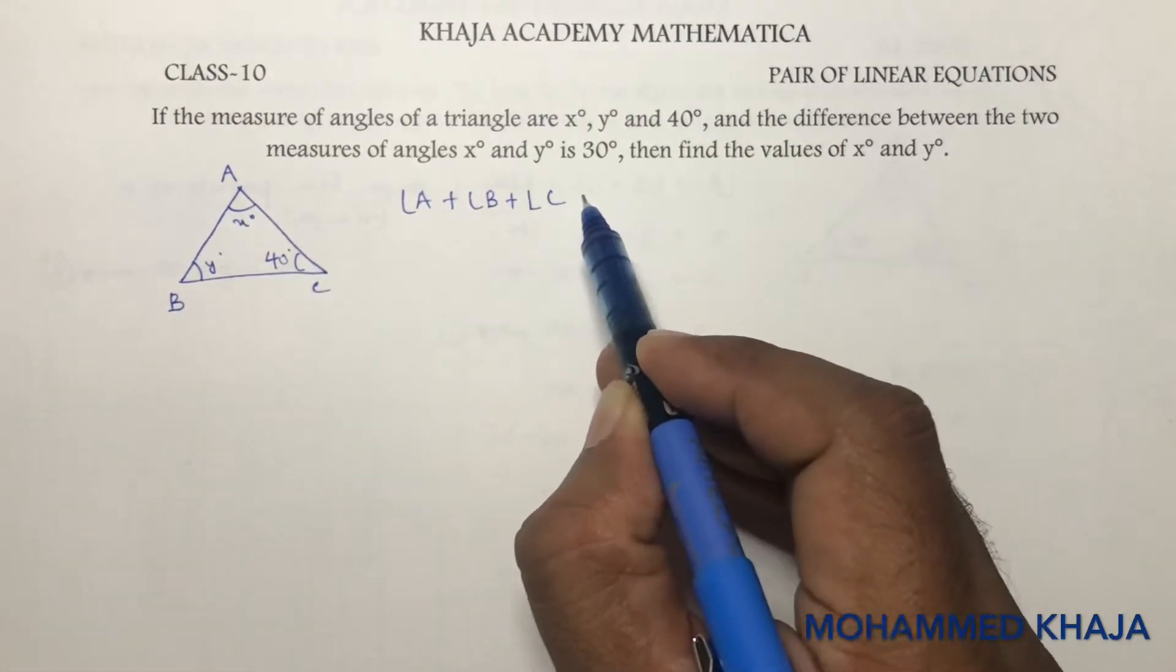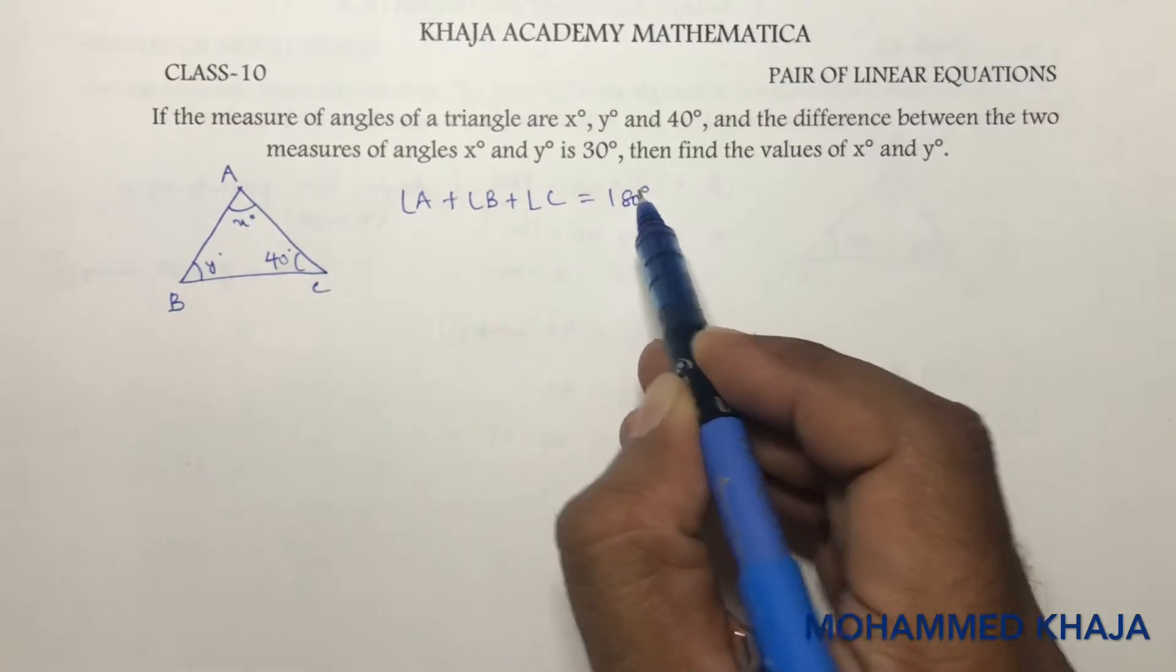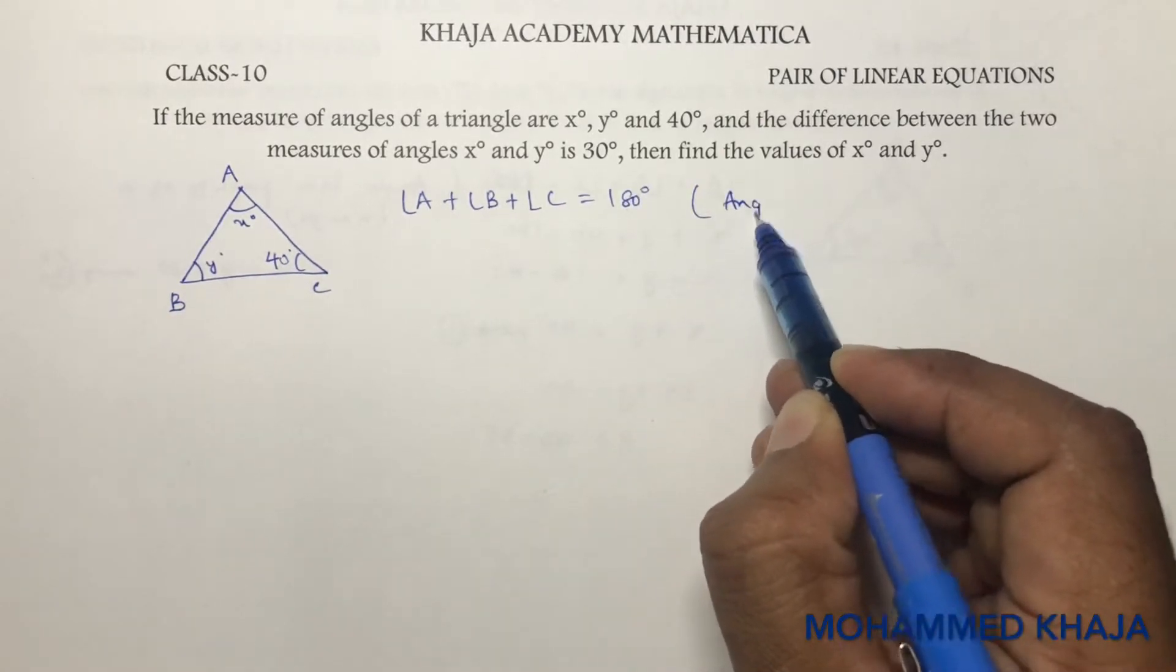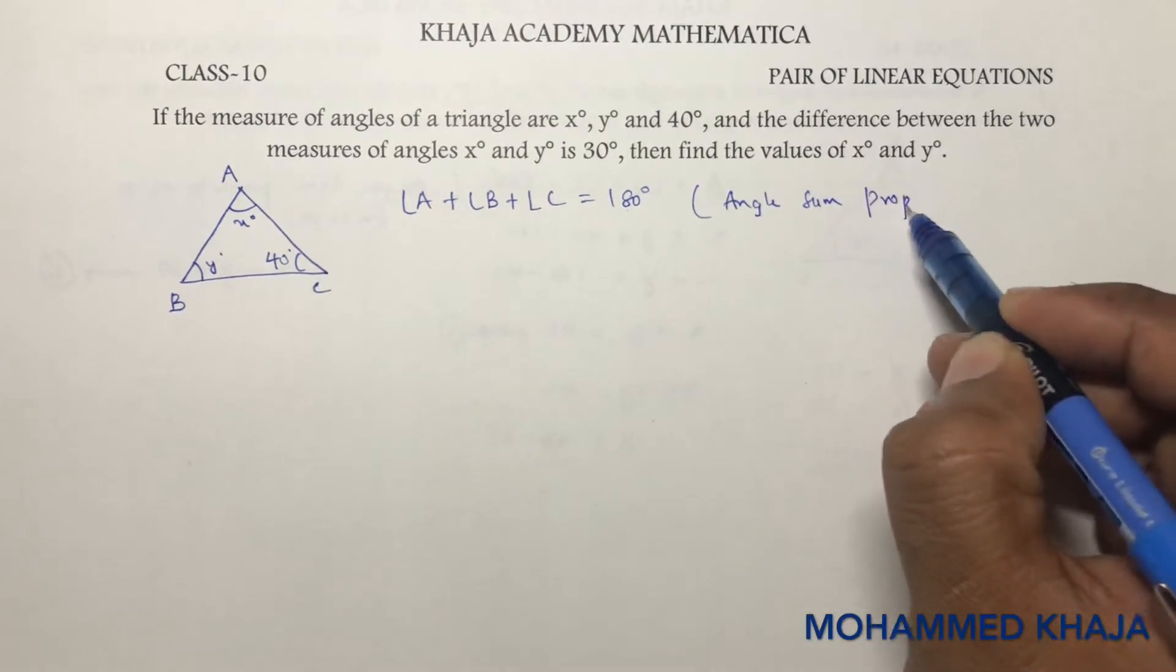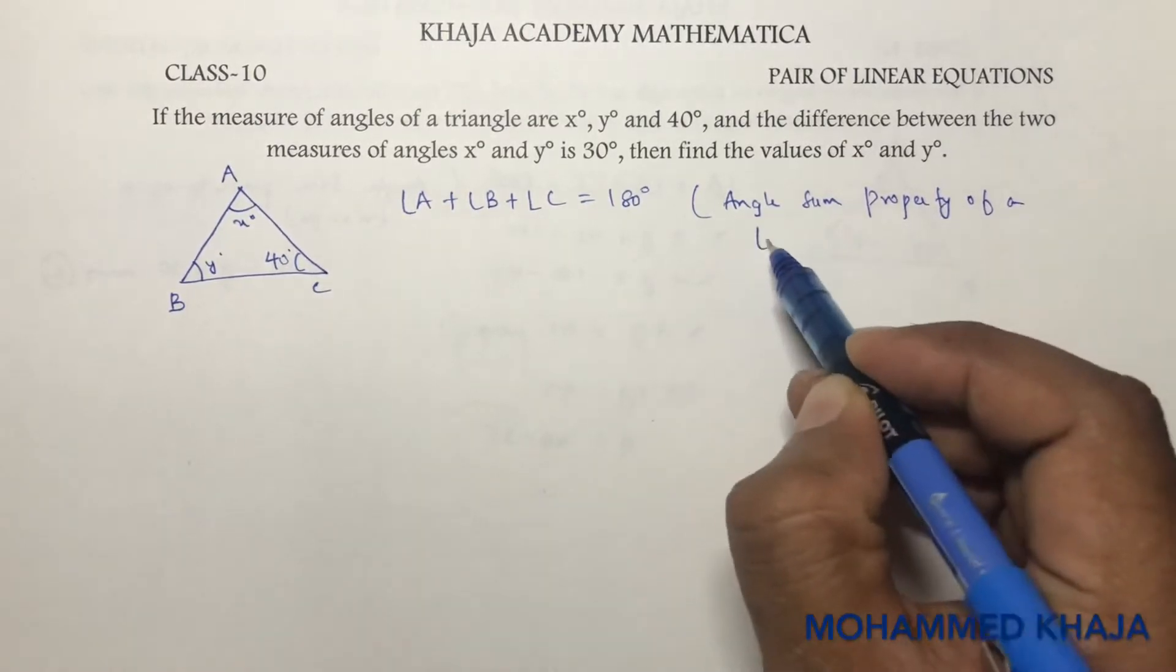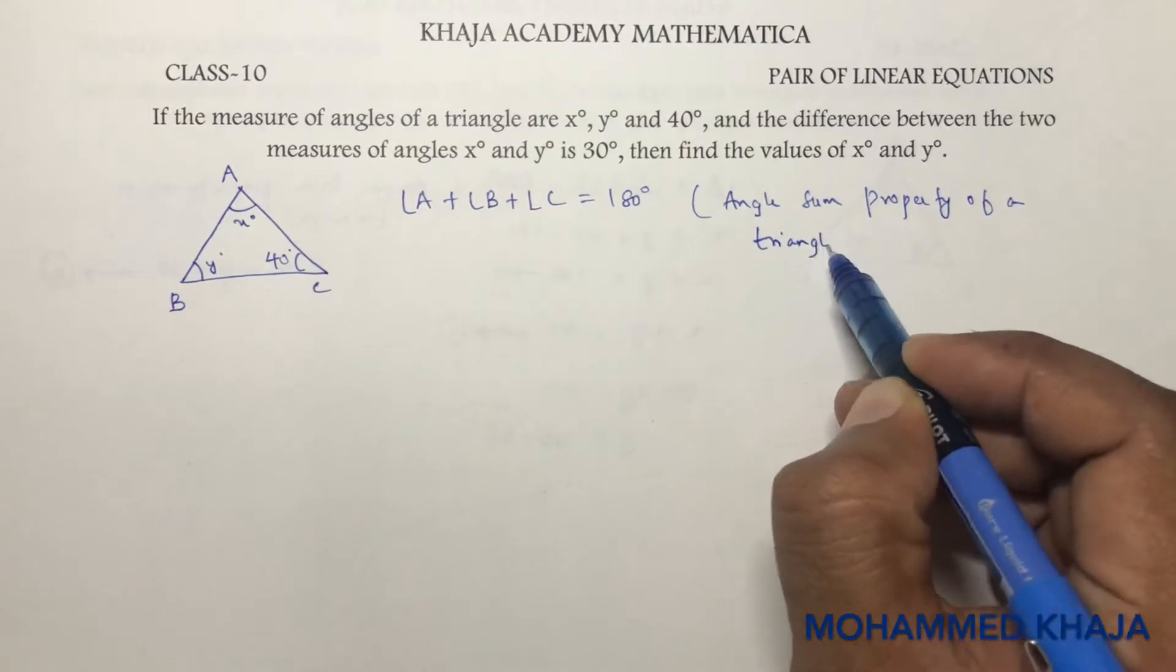This is because of the angle sum property of a triangle. The angle sum property of a triangle states that the sum of three angles of a triangle is 180 degrees.